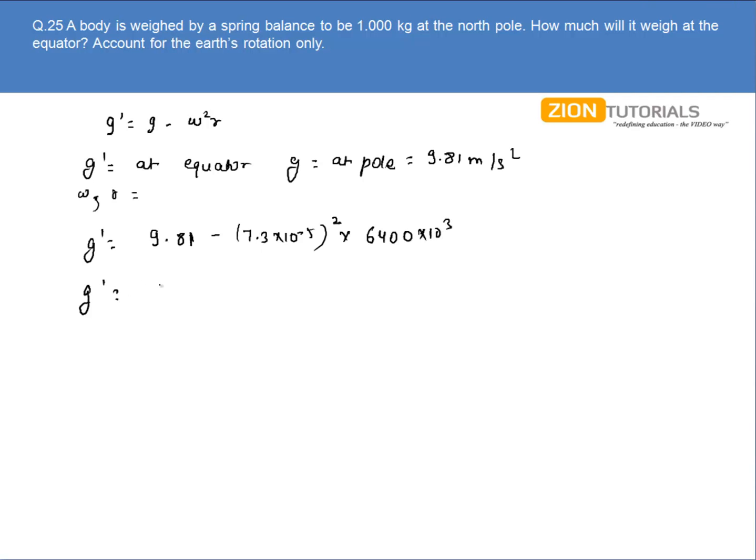The value of g' comes out to be 9.776 m/s². Now we have the acceleration due to gravity at the equator.